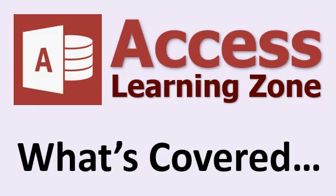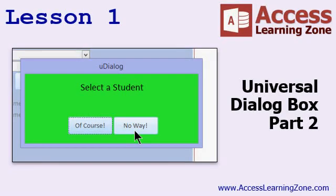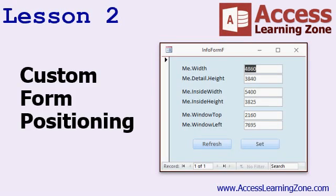Let's take a closer look at what's covered in today's class. In lesson one, we're continuing work on the universal dialog box that we started back in Access Developer 11. In lesson two, we're going to study custom form positioning — how to set the height and width of a window, how to determine what it is first, and then how to manually set it to whatever size we want, along with the coordinates, the positioning of the form on the screen — the top and left coordinates — so we can position and size the window exactly how we want it.